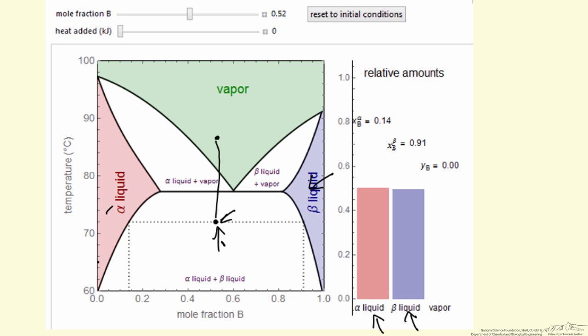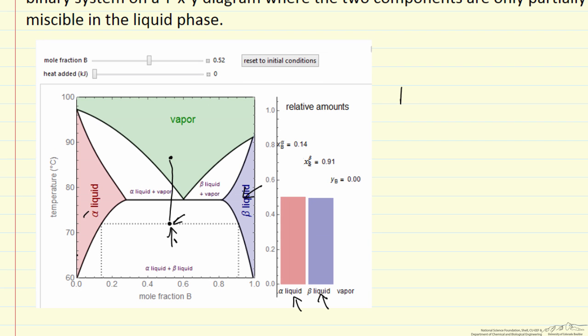If we look at the phase rule, the number of degrees of freedom is two plus the number of components minus the number of phases. So two plus two, let's say we could have three phases. That gives us one degree of freedom, and we've already picked that because the pressure is fixed for this diagram. So we have zero degrees of freedom for three phases, and the three phases exist at just one temperature along this line.